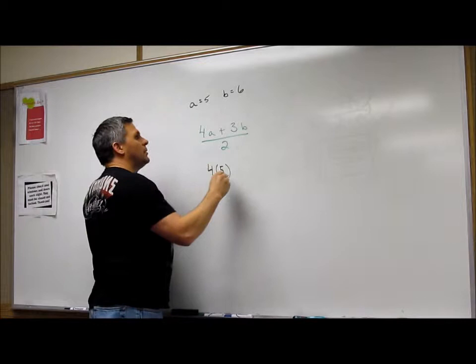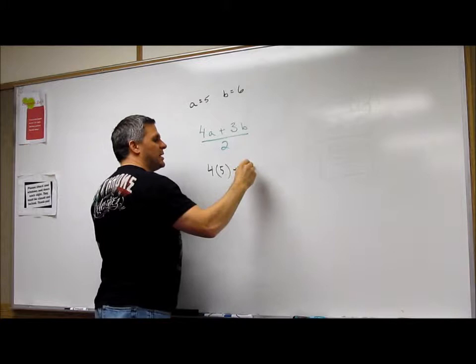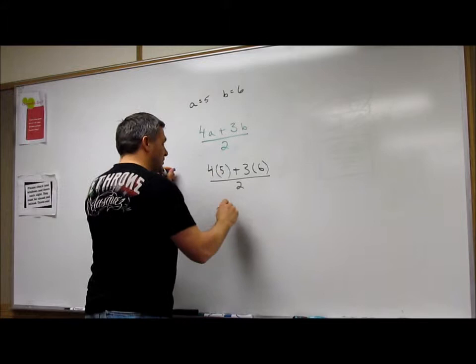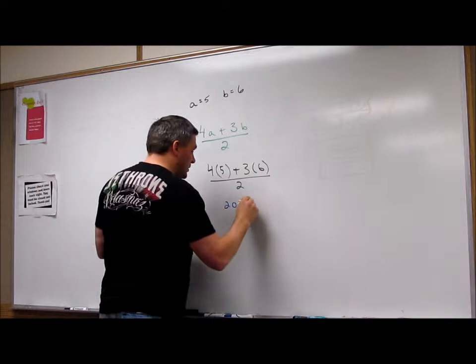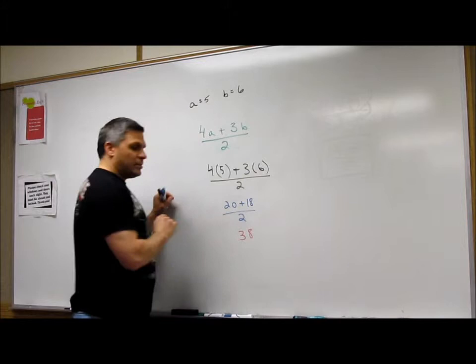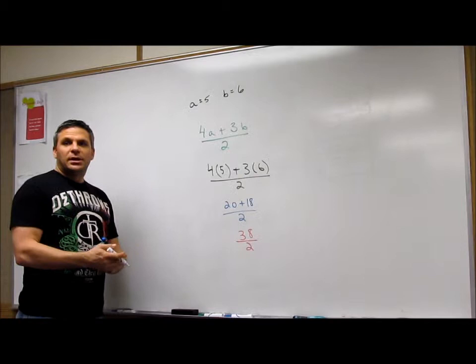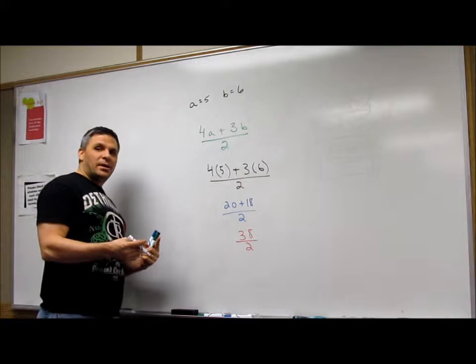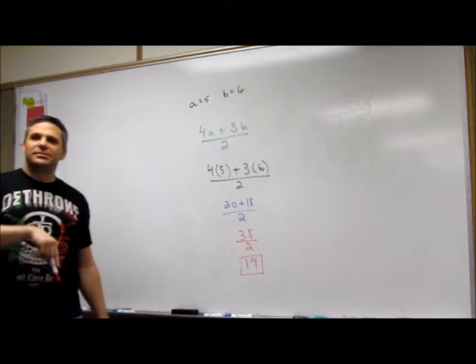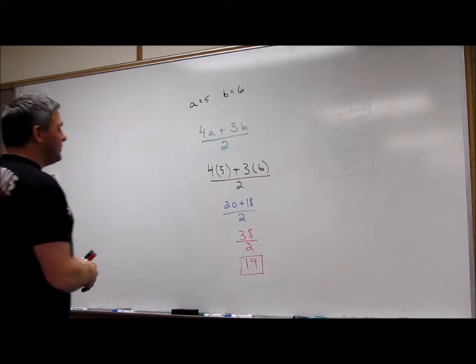Okay? So now I got 4 times A, which is 5, plus 3 times B, which is 6, all divided by 2. So then I have 4 times 5, which is 20, plus 18, divided by 2. So then I have 20 plus 18, which is 38, divided by 2. And then I have 19. Because 9 and 9 is 8. Carry the 1 for 3. Okay?